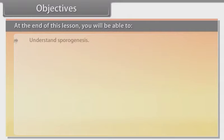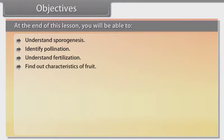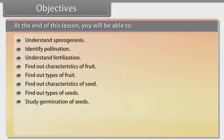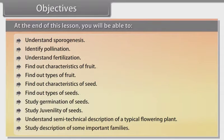At the end of this lesson you will be able to understand sporogenesis, identify pollination, understand fertilization, find out characteristics and types of fruit, find out characteristics and types of seeds, study germination of seeds, study juvenility of seeds, understand semi-technical description of a typical flowering plant, and study description of some important families.